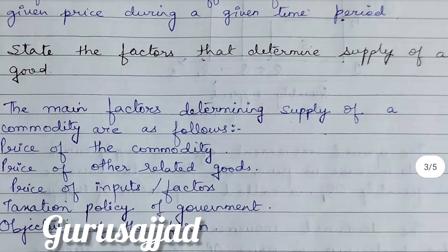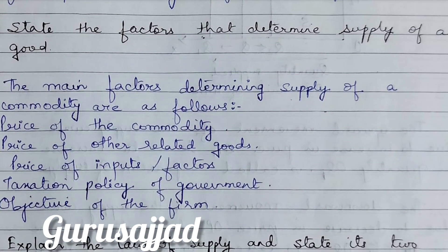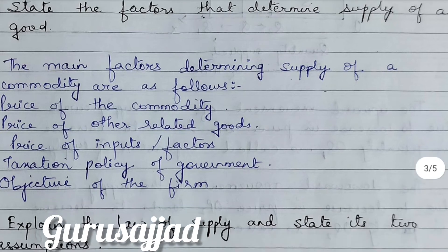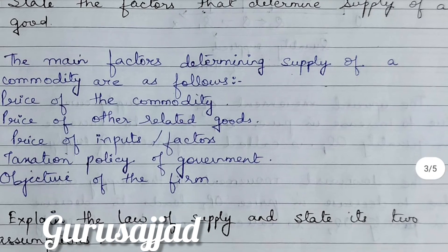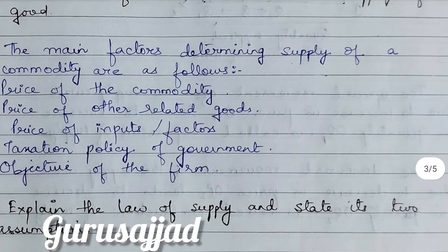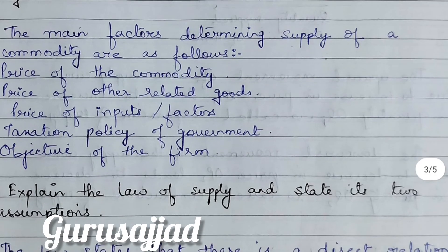The next question is: What are the factors that determine the supply of a good? The main factors determining supply of a good are: (1) Price of the commodity, (2) Price of other related goods, (3) Price of inputs or factors of production, (4) Taxation policy of the government.